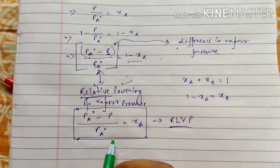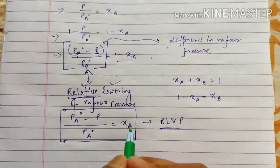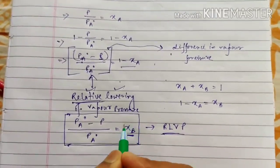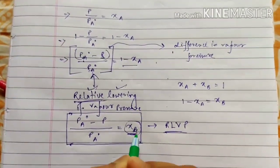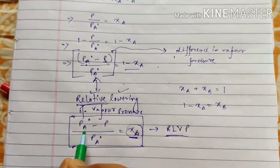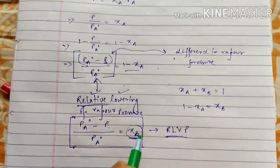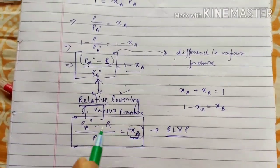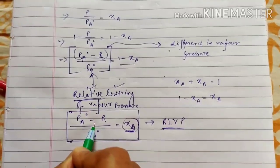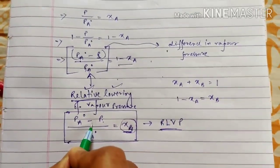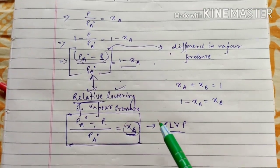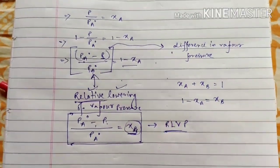The physical significance: as we increase the amount of solute or its mole fraction, the vapor pressure will be lowered. More solute means more lowering of vapor pressure, or more relative lowering of vapor pressure. That is how Raoult's law changes in this particular case.